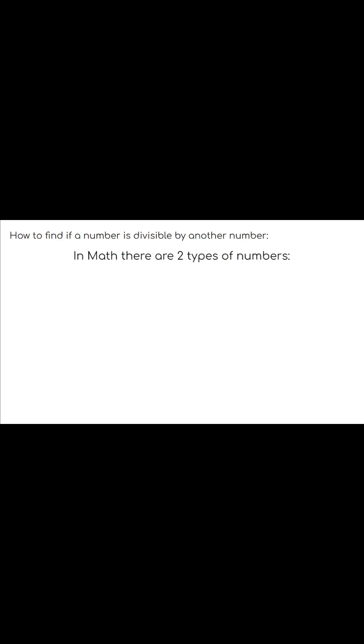To begin, we need to understand what the two types of numbers are in math. The first are prime numbers. These are numbers with their factors only being 1 and itself. For example, it's going to be 3, 7, or 13.